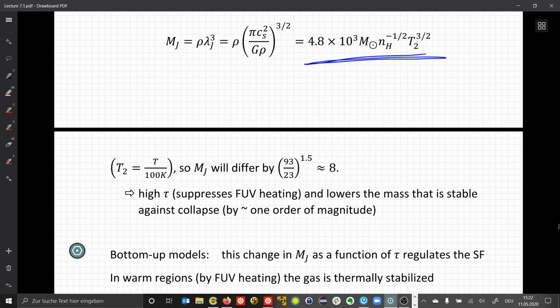So the temperature, depending on whether we have something like 90 or 20 Kelvin temperature, makes a difference of factor 8 in the Jeans mass. So at high values of the optical depth, that prohibits any further ultraviolet heating. This lowers the mass that is stable against collapse. So smaller volumes can now become gravitationally unstable. The idea of these bottom-up models is that the change in the Jeans mass as a function of tau regulates the star formation.